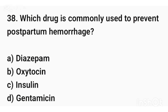Question number thirty-eight. Which drug is commonly used to prevent postpartum hemorrhage? The correct answer is option B: Oxytocin.